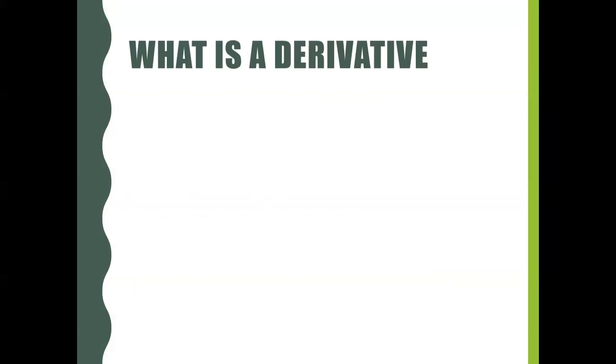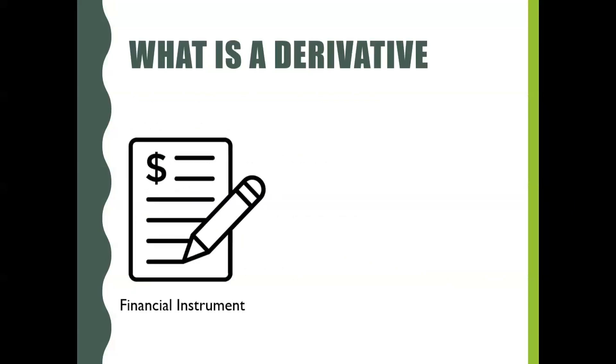What is a derivative? A derivative is a financial instrument with a value that is derived from an underlying asset or group of assets.